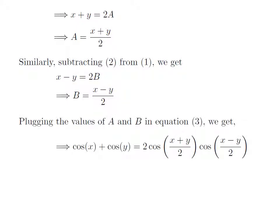Plugging the values of a and b in terms of x and y into equation 3, we get cosine of x plus cosine of y is equal to 2 times cosine of x plus y divided by 2, times cosine of x minus y divided by 2. So this is the identity we set out to derive for cosine of x plus cosine of y.